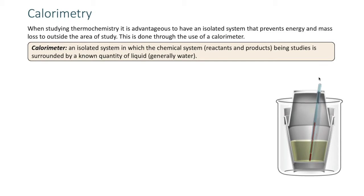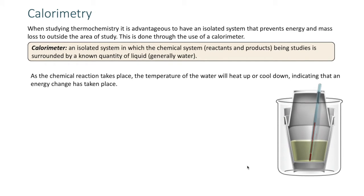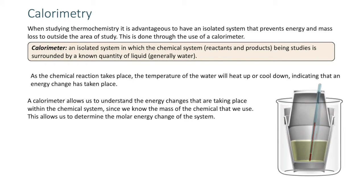Here's a picture of a simple calorimeter often used in high school or introductory chemistry. We have two styrofoam cups nestled in one another, and a thermometer, so we can measure temperature changes within the calorimeter. As a chemical reaction takes place, the temperature of the water will either heat up or cool down, indicating an energy change. The calorimeter also allows us to determine the molar energy change of the system, since we know the mass of the chemical being used.